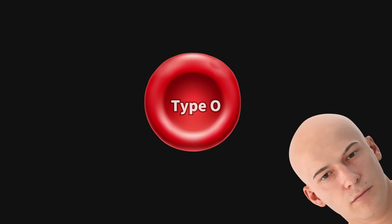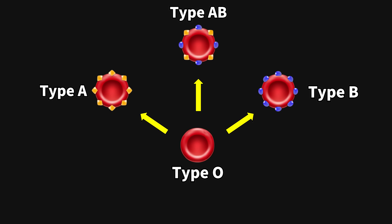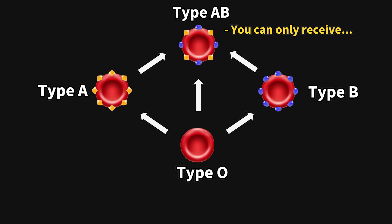For example, type O red blood cells don't have any antigens, which means they can be safely given in small amounts to anyone regardless of their blood type. However, type AB blood has both A and B antigens, making it tricky — you can't give even a little bit of type AB blood to someone with a different blood type without risking a reaction.